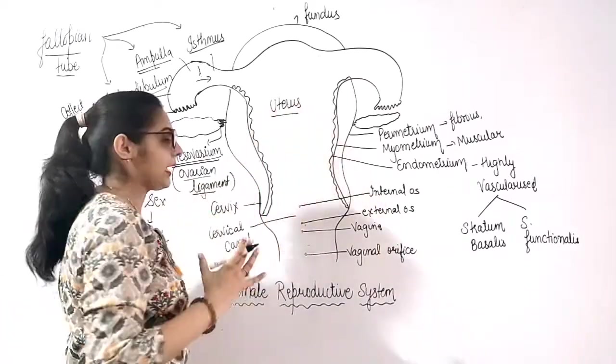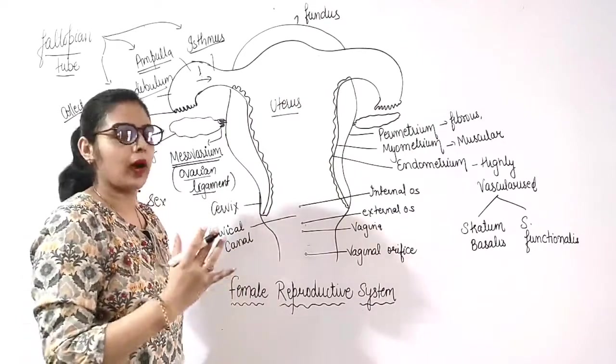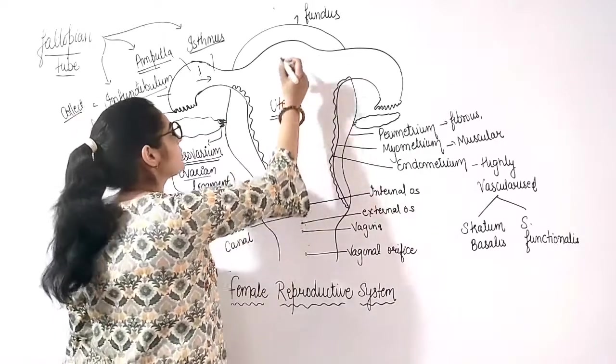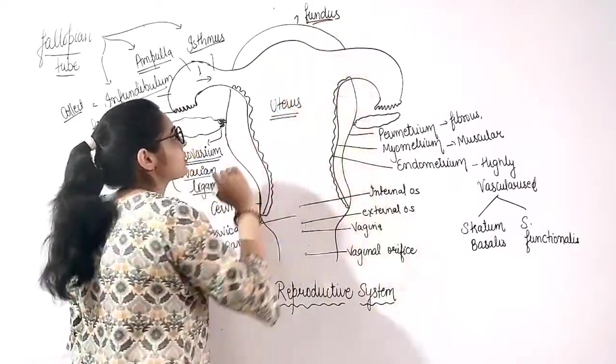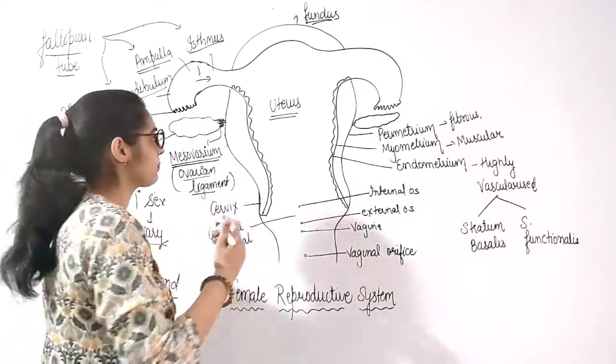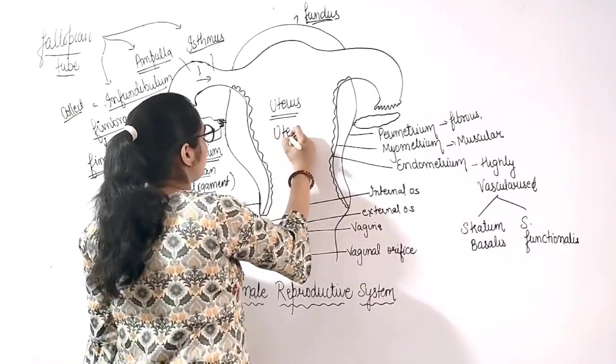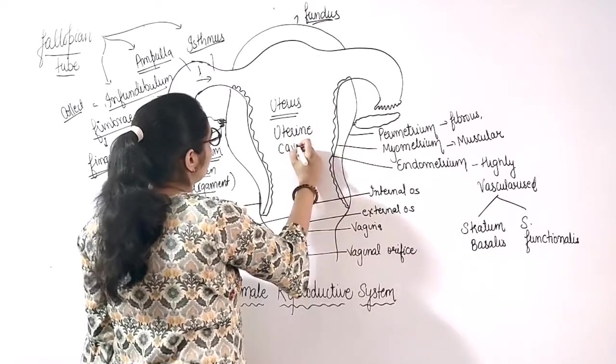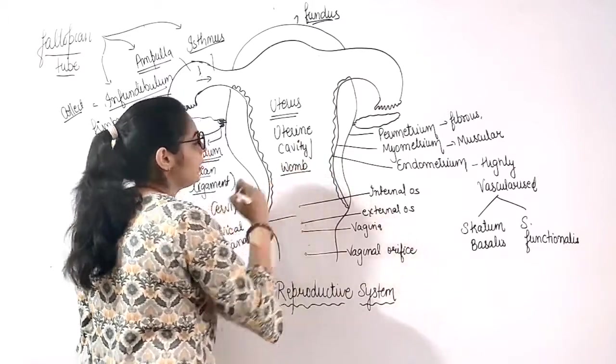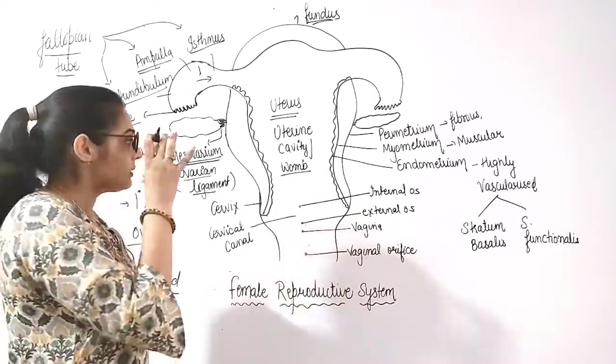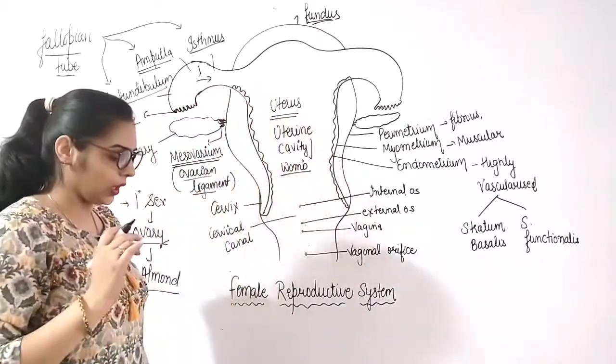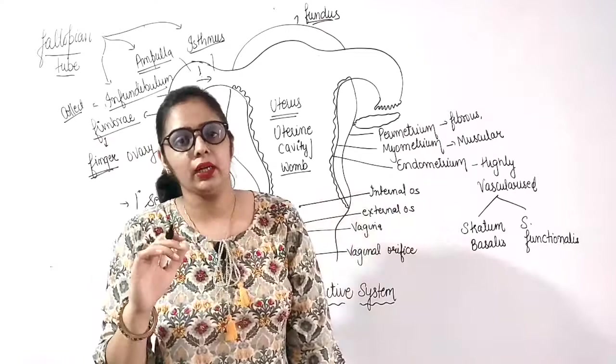Now this is the next cavity or the part that is known as uterus. And uterus ka upper part that is known as the fundus. Uterus ka upper part that is known as fundus. Uterus or we can call it uterine cavity or womb of the mother. When zygote forms, here zygote will form after fusion, then it will attach to uterine walls.